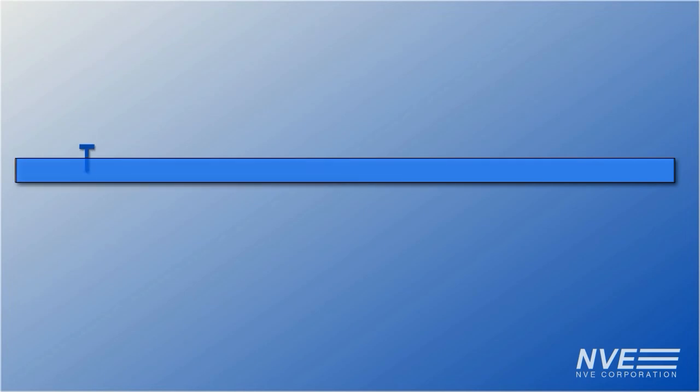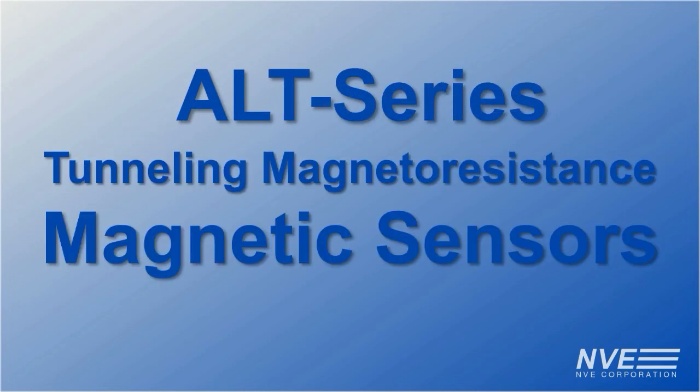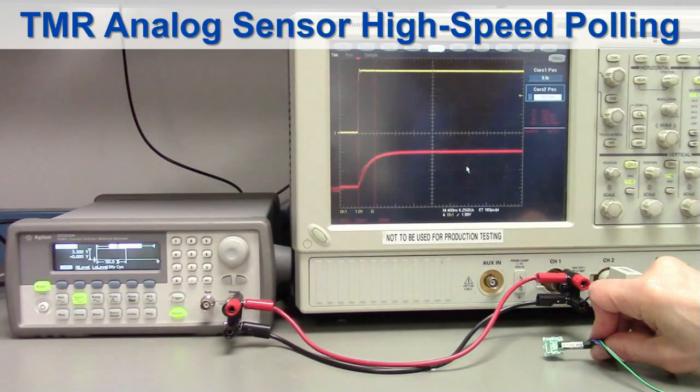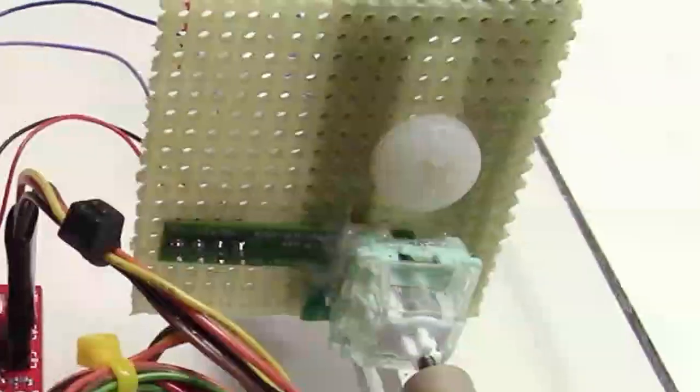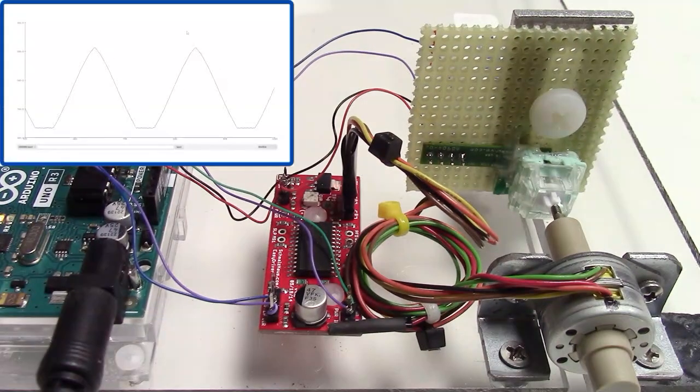NVE TMR sensors are fast and have no active components to delay turn-on, making them ideal for duty cycling to reduce power or multiplexing to reduce I/O. In a previous video, we showed how a new tunneling magnetoresistance sensor can be used for perpendicular proximity sensing.